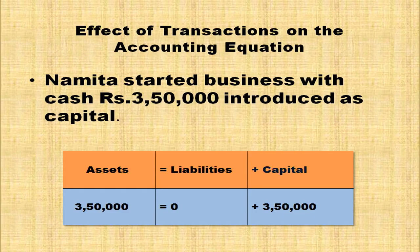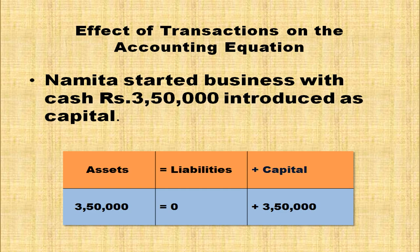Now let us analyze the effect on the accounting equation in various transactions one by one. Namitha started business with cash rupees 3,50,000, introduced as capital. In the asset side, open a column for cash: cash balance 3,50,000. In the capital column: 3,50,000. Assets = Liabilities + Capital. Accounting equation is satisfied.